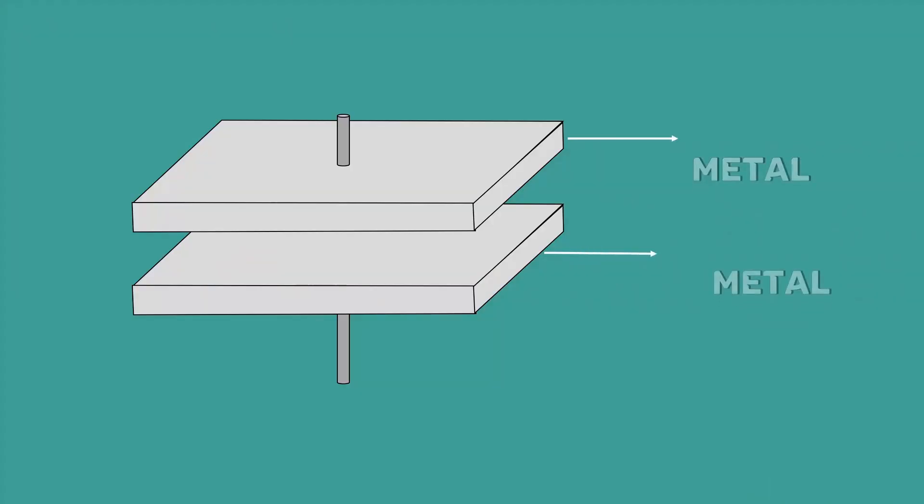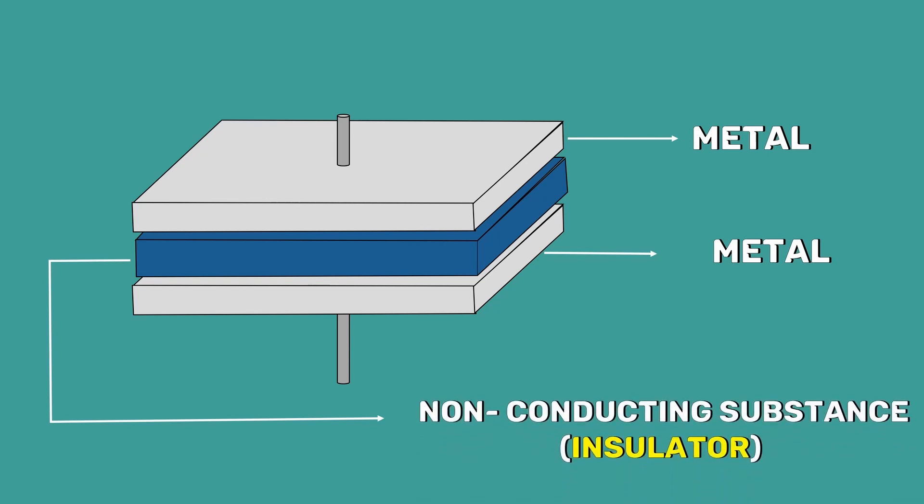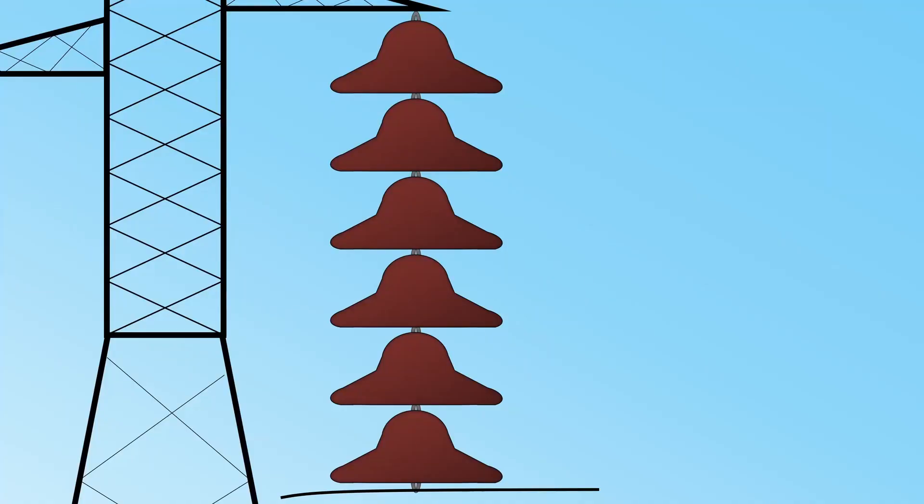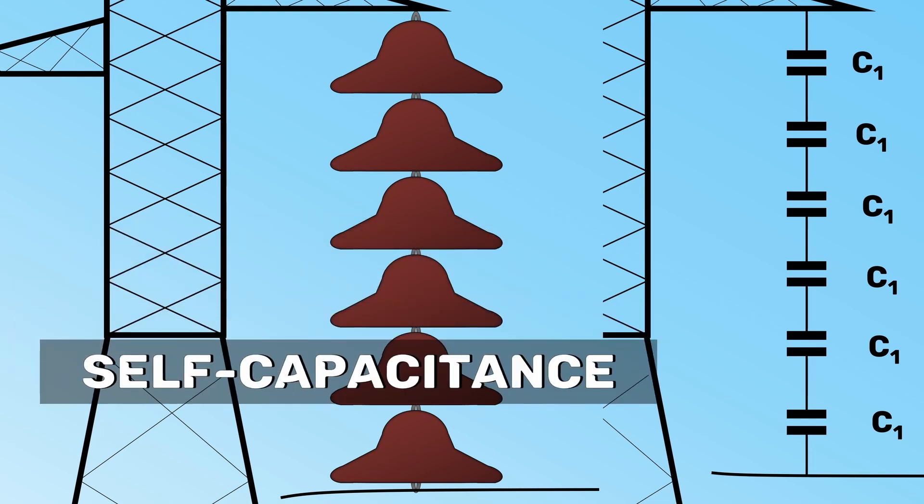Now, let me ask you one question. What is the name of the device that is constructed using two metal plates separated by a non-conducting substance? Of course, it's a capacitor. The non-conducting substance can be any insulator or even air. Coming back to our suspension insulator, each disc acts as a capacitor. This is called self-capacitance.